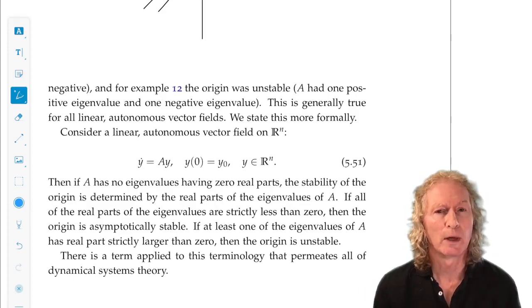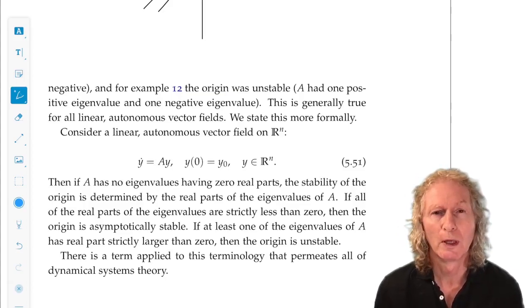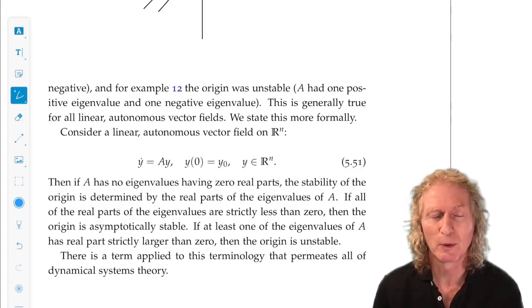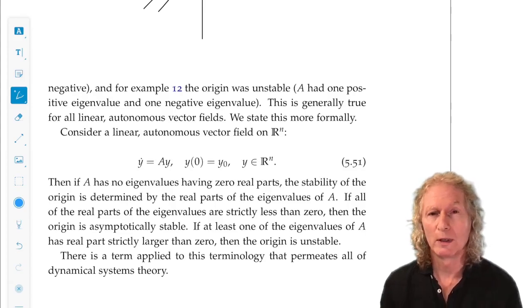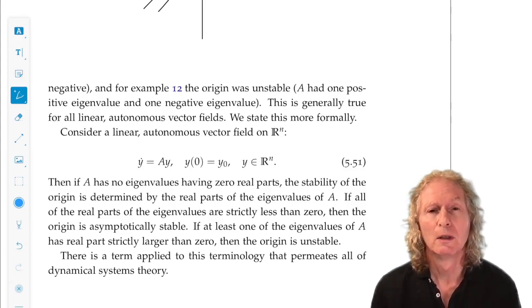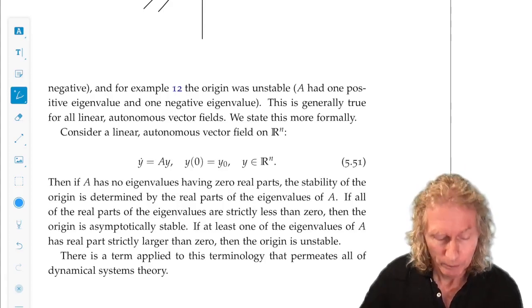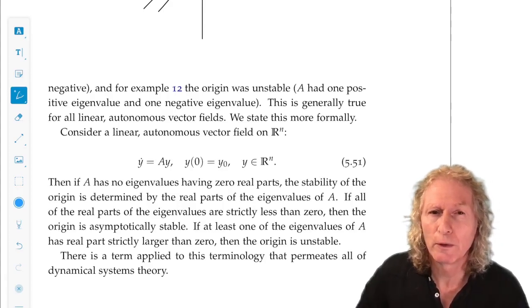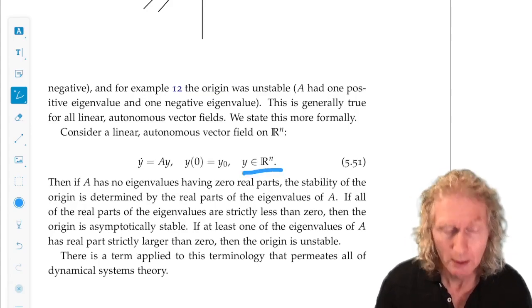The second example had eigenvalues with positive real part. This was a source. The second advanced example had eigenvalues with negative real part and an imaginary part, but it didn't matter. That was a sink. And in the third example, one of the eigenvalues was positive, one negative, but it was still unstable at the origin, and that was a saddle point. This is a general feature even for n-dimensional linear systems.